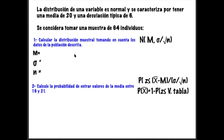Como primer paso, nos piden calcular la distribución muestral tomando en cuenta los datos de la población bajo esta fórmula. Tenemos que identificar cada uno de estos estimadores: el dato inicial es 20, que es nuestra media de la población; la desviación estándar es 6, y el tamaño de muestra será 64. Ya tenemos los tres datos para hacer la sustitución.